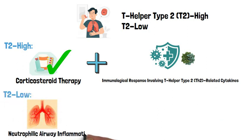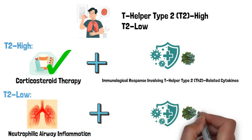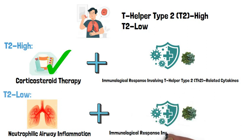Neutrophilic airway inflammation is a hallmark of T2-low asthma, which frequently exhibits an immunological response involving interleukin 17 and TH17 cells.